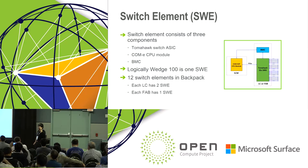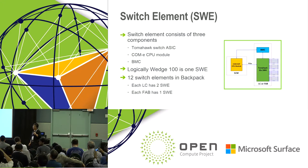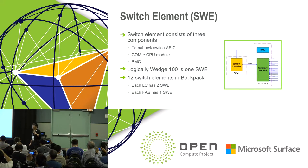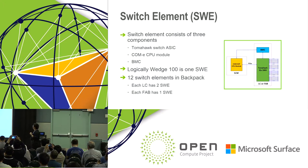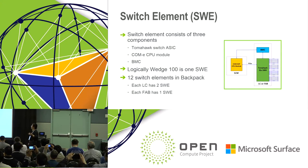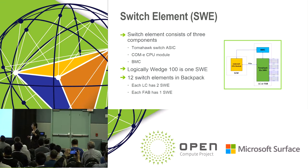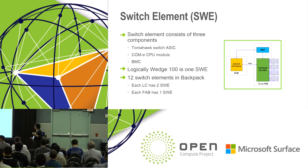Switch element: the whole Backpack is built upon a fully disaggregated concept. We came out with a switch element concept. The switch element has three components. The first is a Tomahawk ASIC — that's the data plane. The second is a ComE CPU module with an Intel CPU — that's the control plane. The third is BMC, the management plane. We clearly separate data plane, control plane, and management plane, and pack them together as a switch element. Wedge 100 is like a single switch element, and for Backpack we pack 12 switch elements together to become a Backpack chassis.